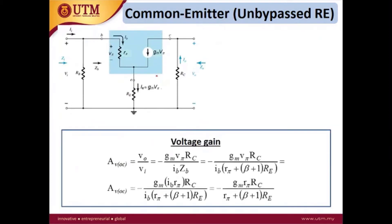For the voltage gain, the equation for the common emitter unbypassed is more complicated compared to the bypassed case. The first thing you need to confirm when deriving the voltage gain is the definition. In this slide, we want to solve AVOC, which is Vout open-circuit divided by Vi.